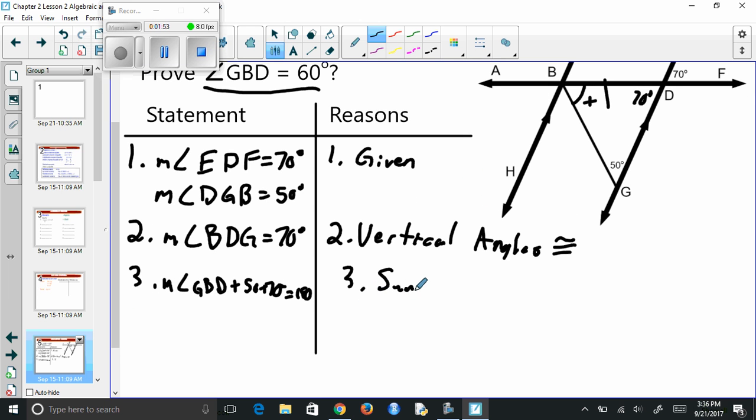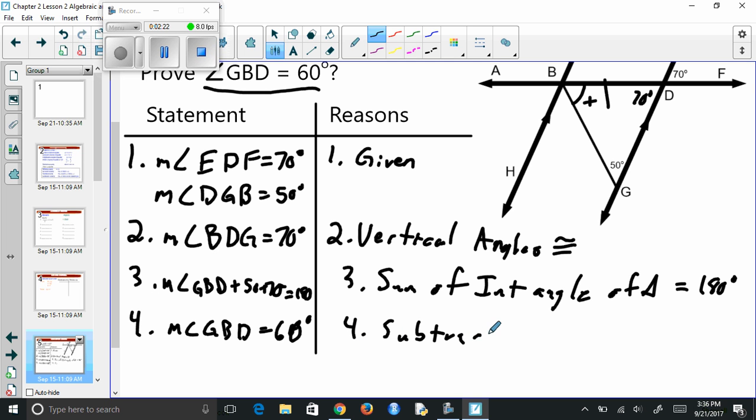Sum of interior angles of a triangle equals 180 degrees. So once we have that, then we just subtract the 50 and 70 from both sides. So the measure of angle GBD is equal to 60 degrees. And that's the subtraction property of equality.